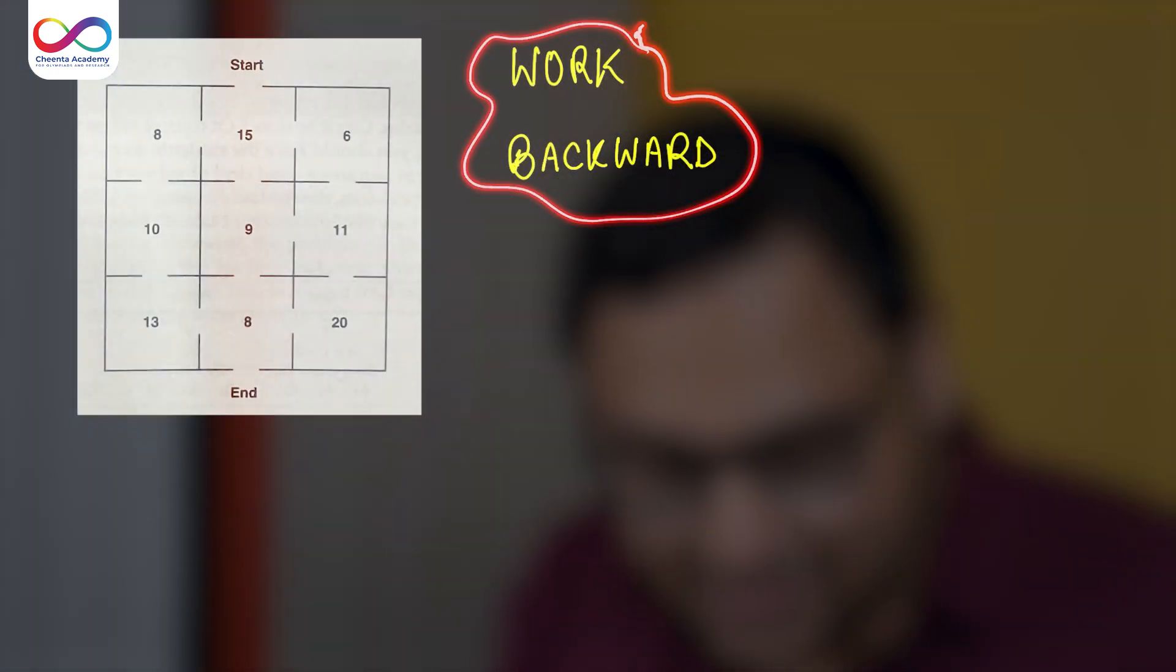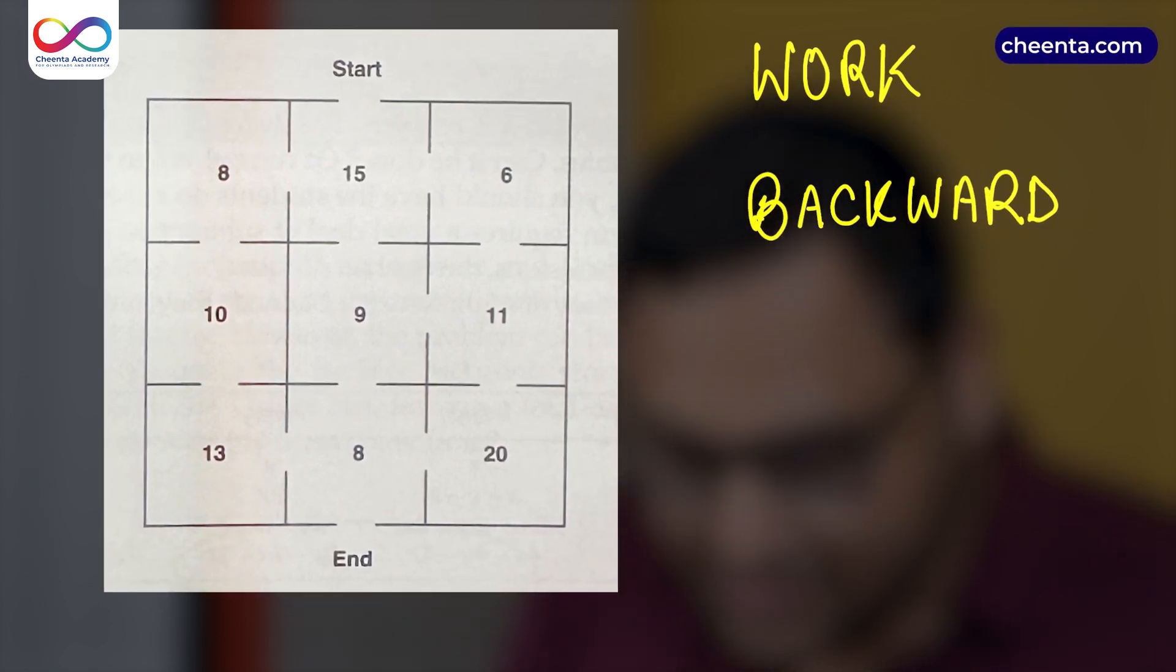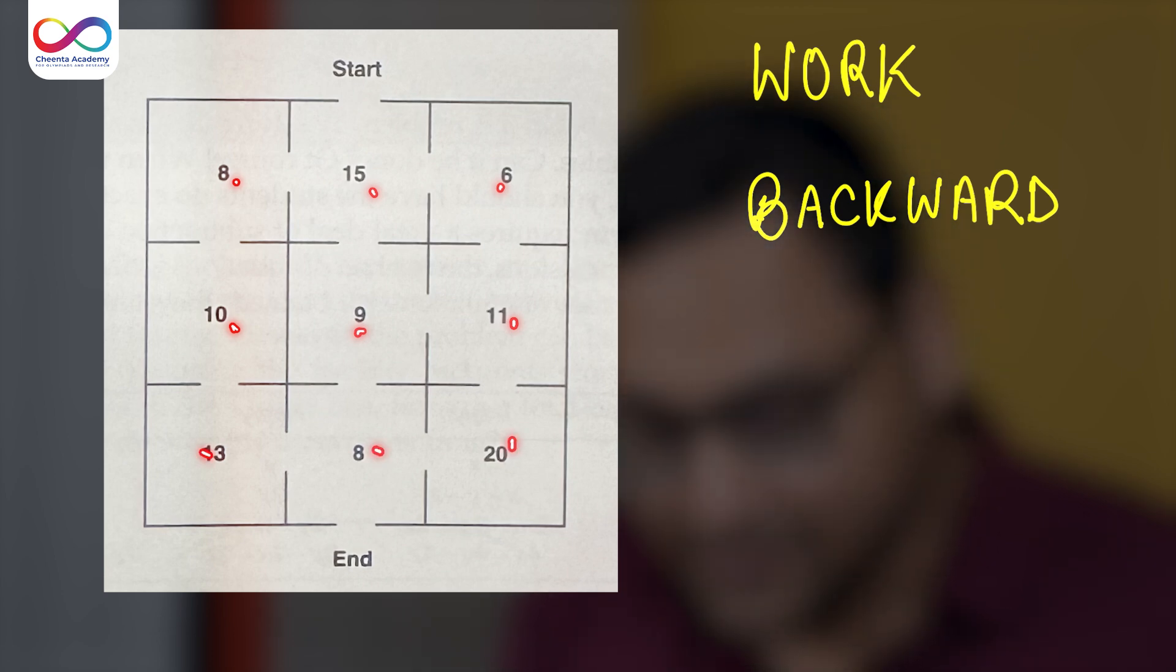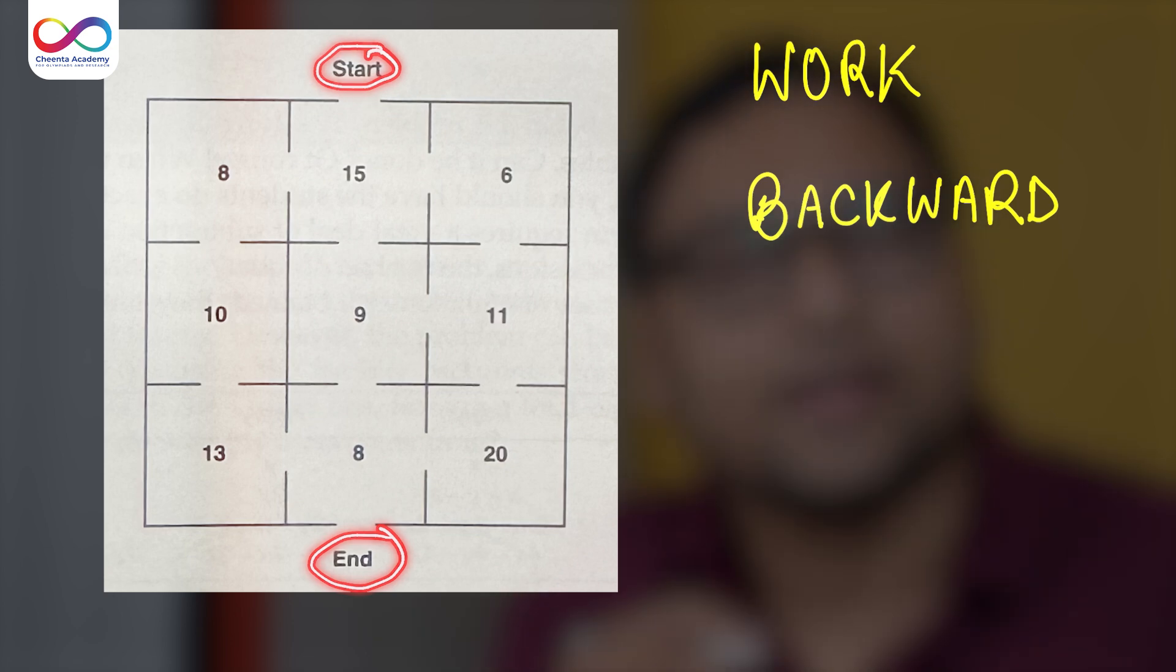We will play a small game and I will give you a challenge question. First, let's look at this grid carefully. There are nine numbers in this grid and you can see that there is a starting point and there is an ending point.